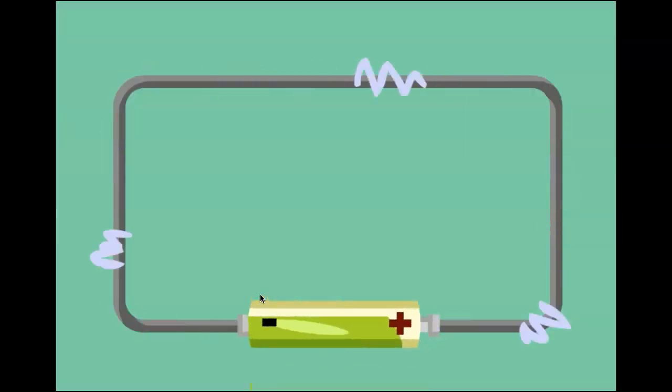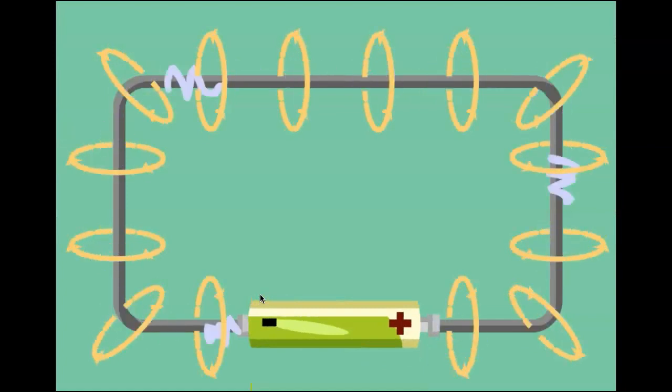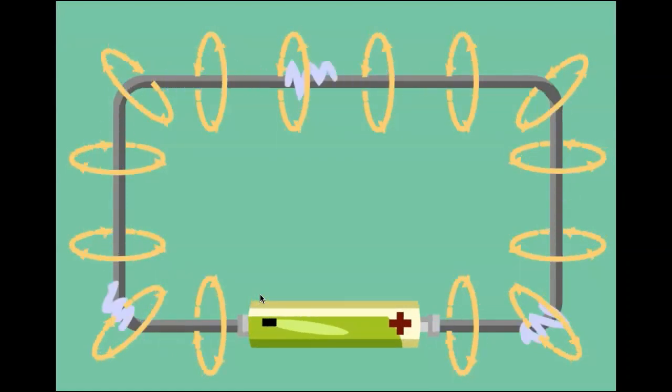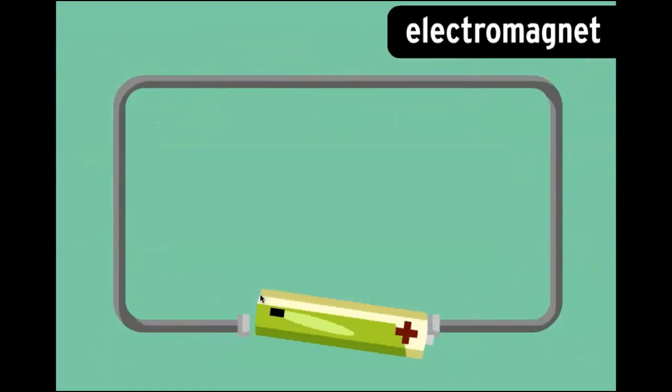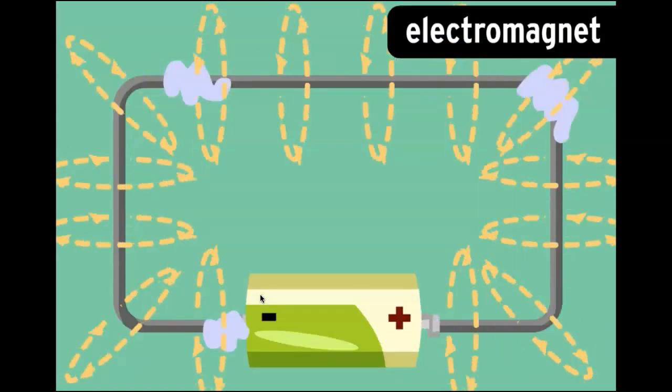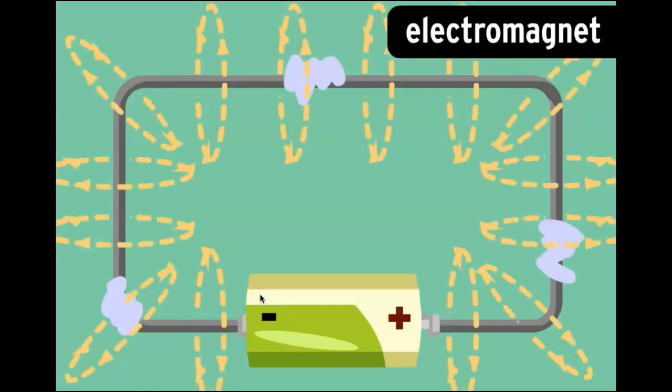Oh, when you run an electric current through a piece of wire, it creates a magnetic field around the wire. That's an electromagnet. You can control the strength of the magnetic field by changing the amount of electric current you run through the wire.